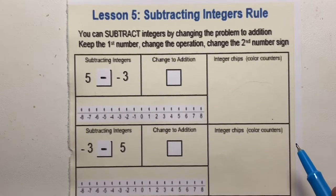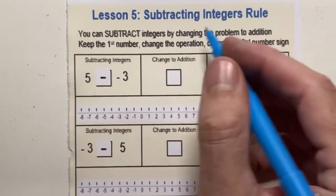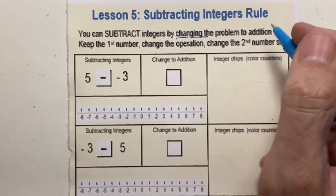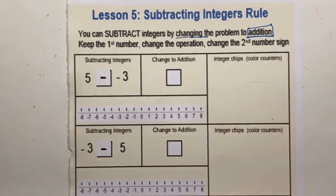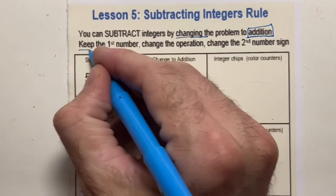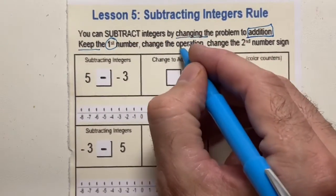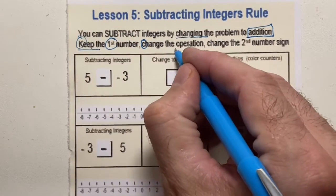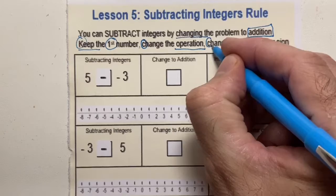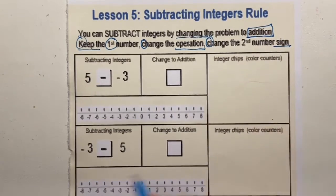Hey, this is Mr. Elmhurst with Lesson 5 for Subtracting Integers rule. We are going to be able to subtract integers by simply changing the problem into addition. We're going to practice one rule: keep the first number the same, change the operation, and change the second number's sign.